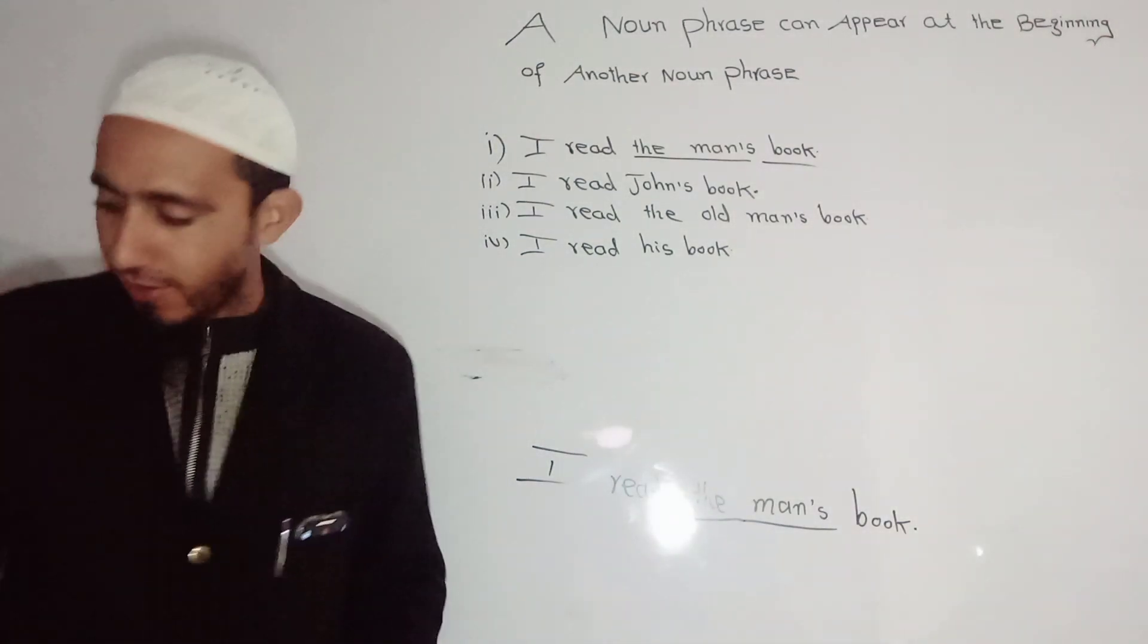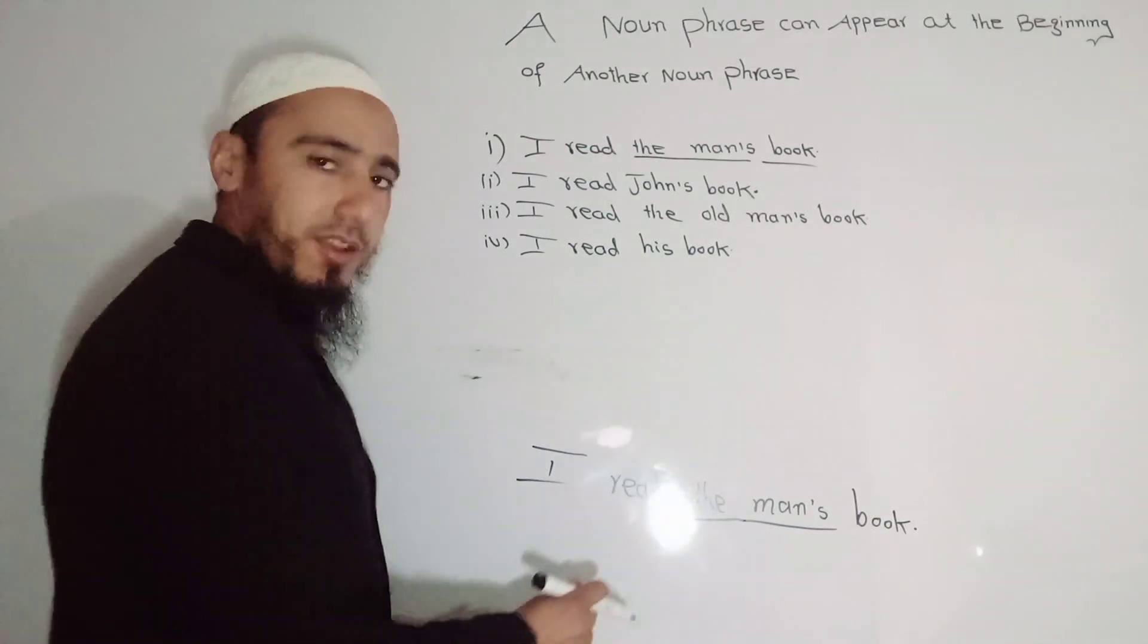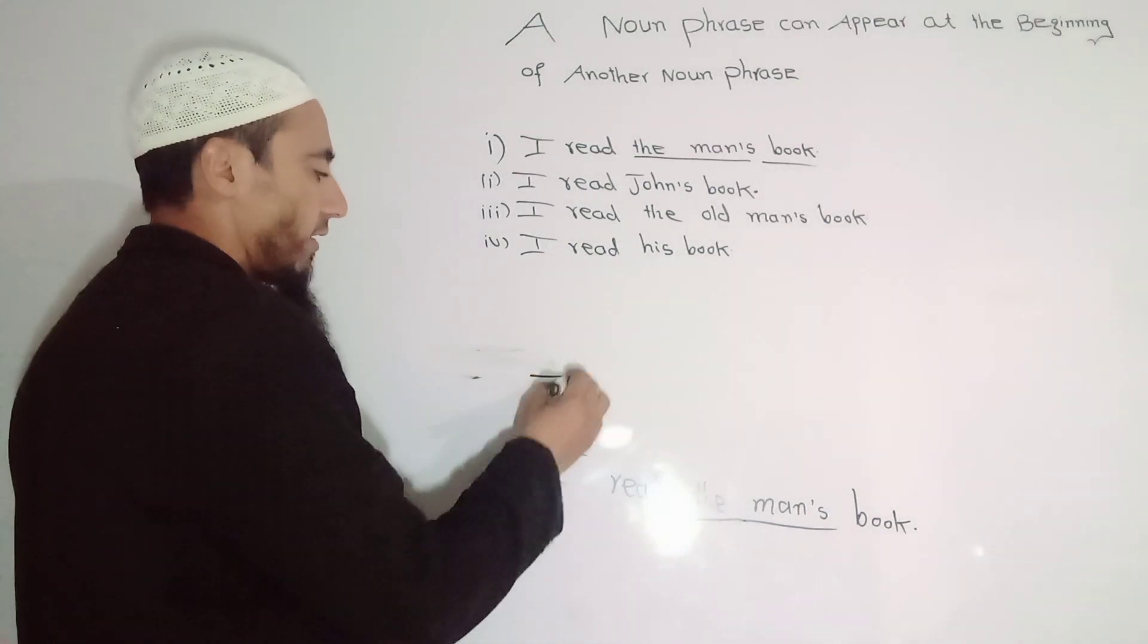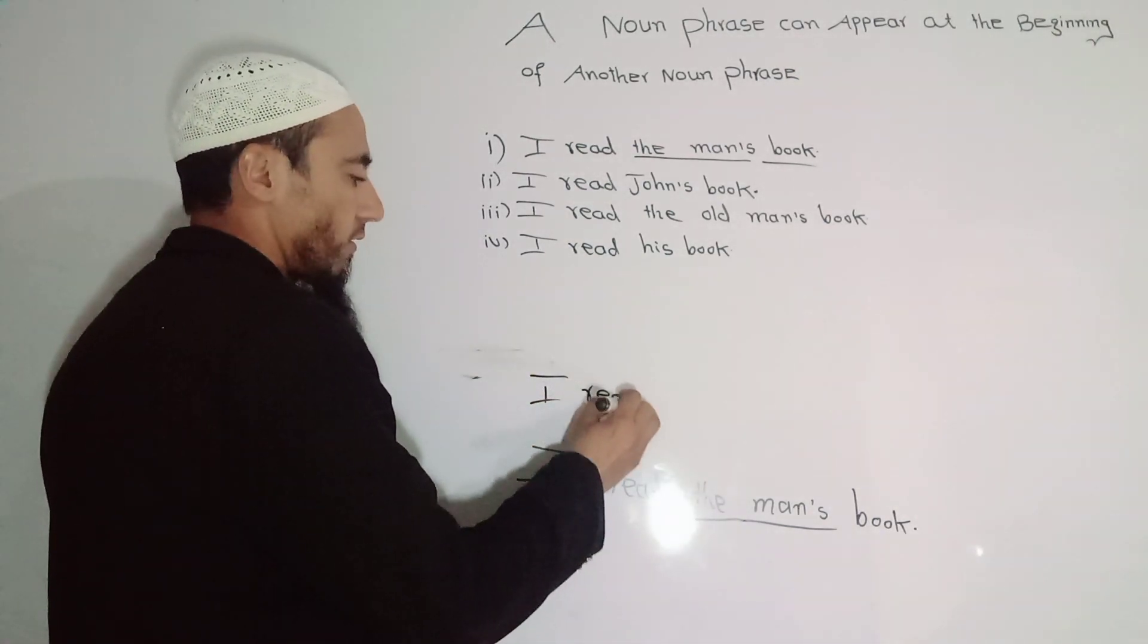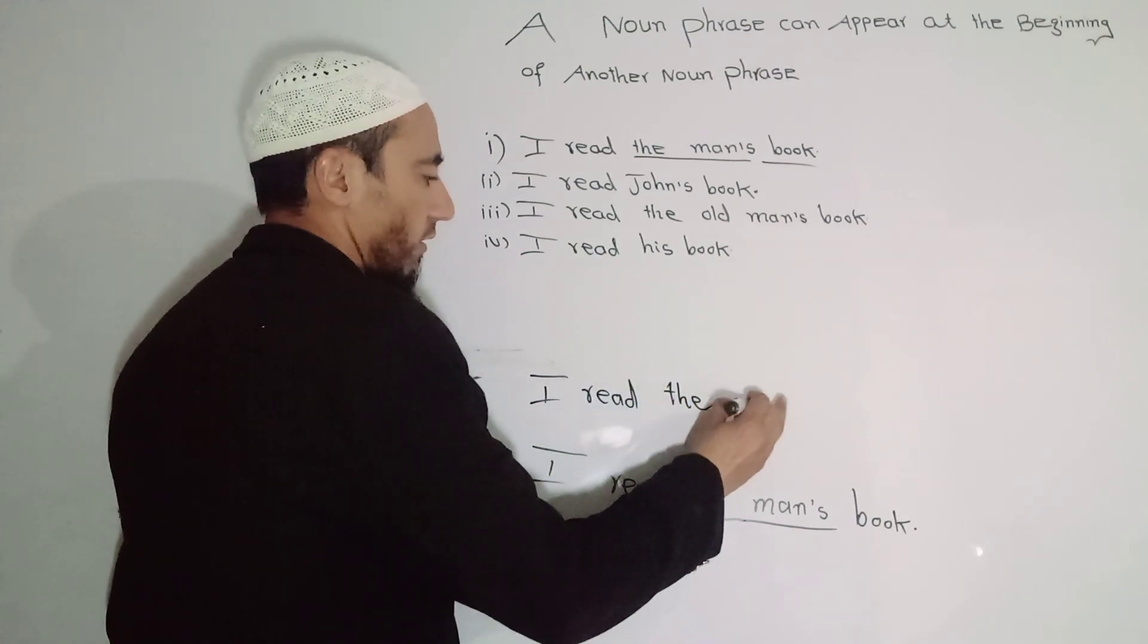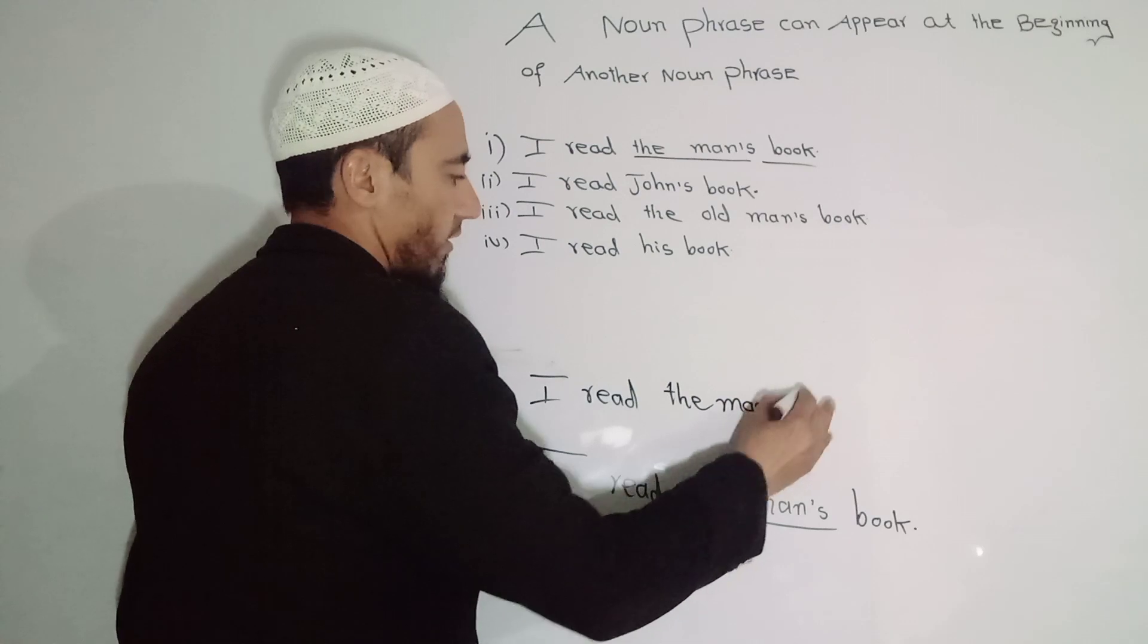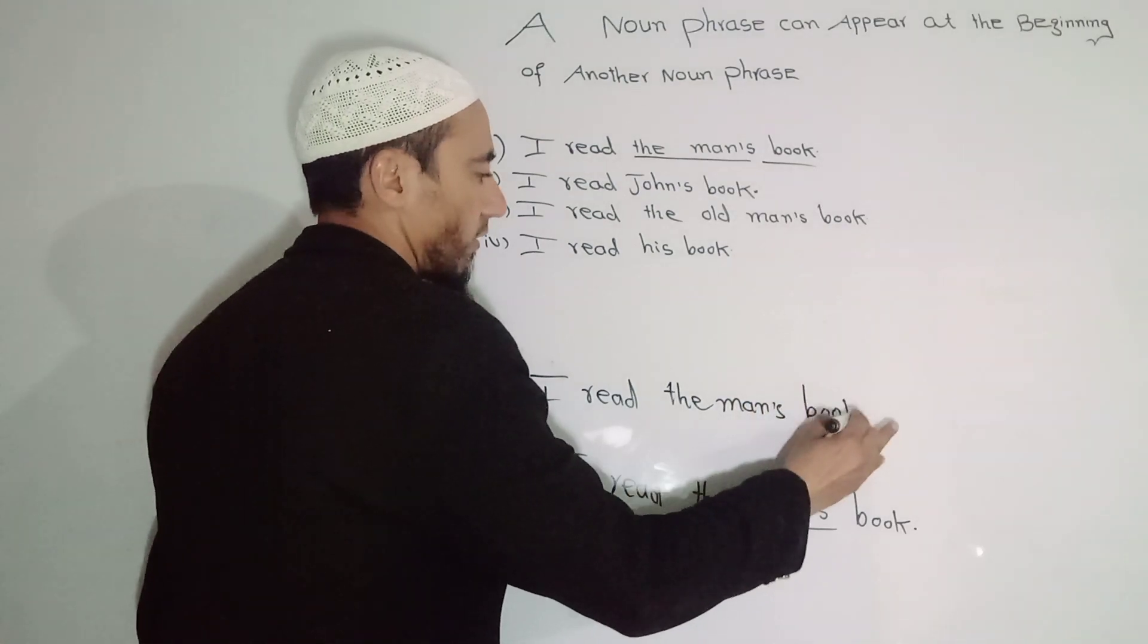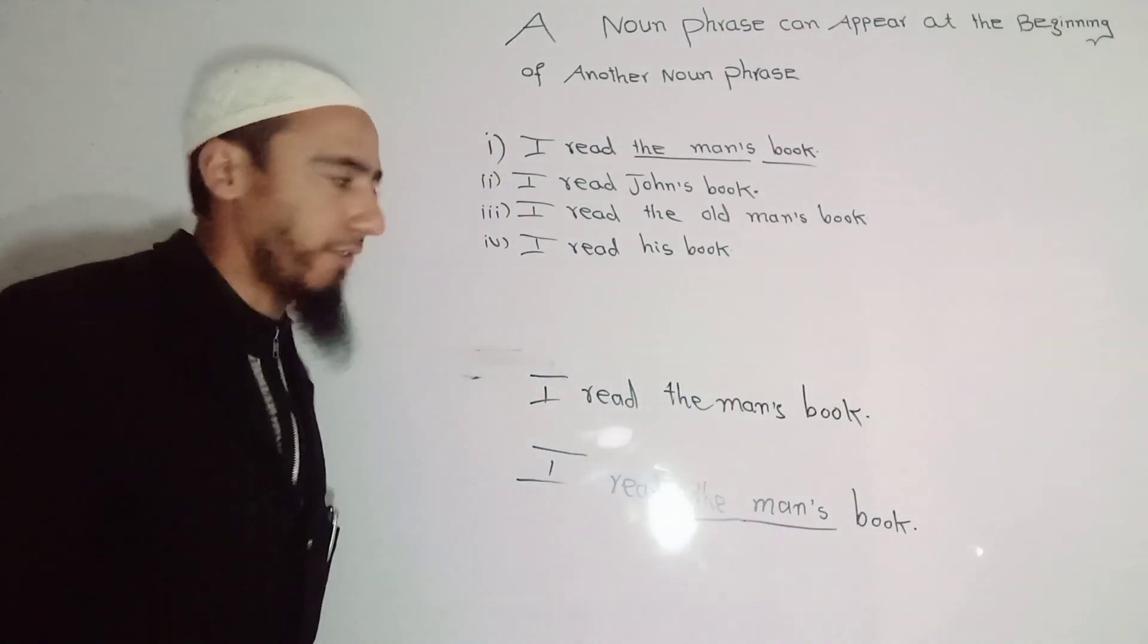Now I think there is a line, the sentence is not visible. So let me write it again. I read the man's book. Okay, now it's clear.